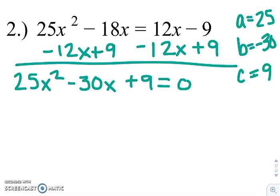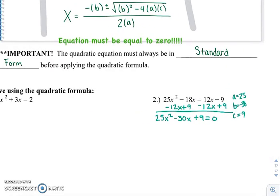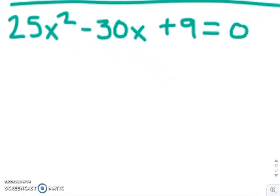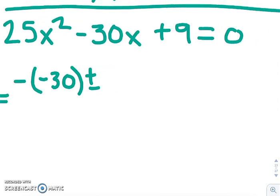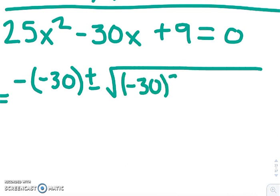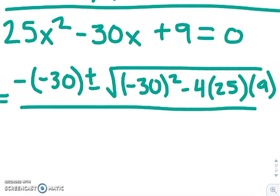So now all we do is plug it into our equation. So x equals negative b, so -30, plus or minus the square root of our b value squared, minus 4 times a, which is 25, times c, which is 9. And that whole entire thing is over 2 times our a value.